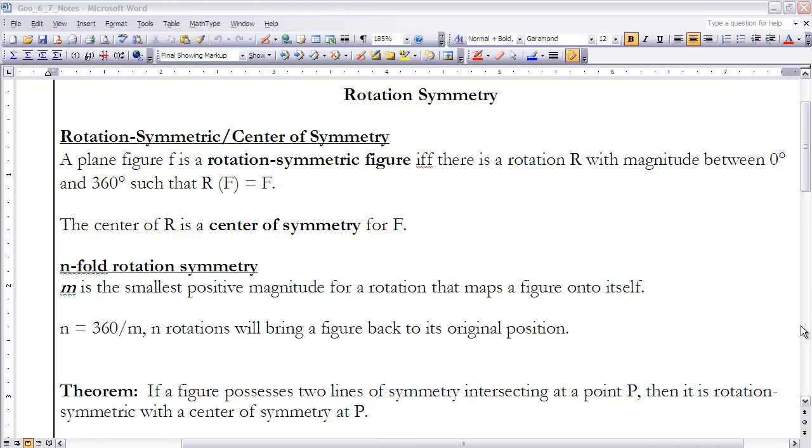Earlier in this chapter we talked about figures being reflection symmetric and we've explored that idea of reflection symmetry as we looked at many different figures, including all the special quadrilaterals. Now we want to look at a second type of symmetry which we call rotation symmetry.